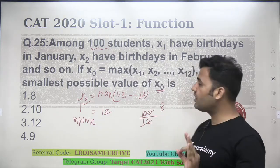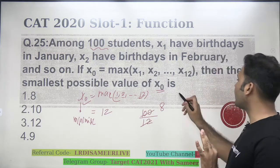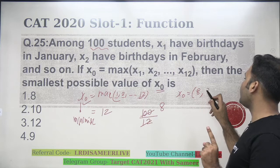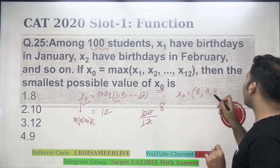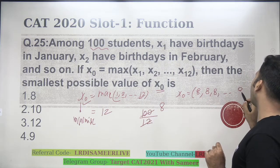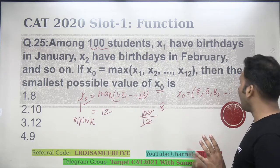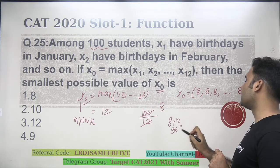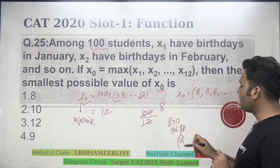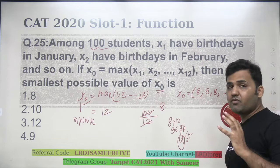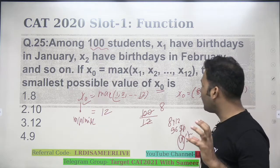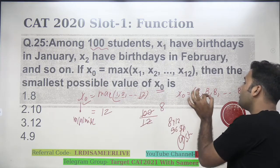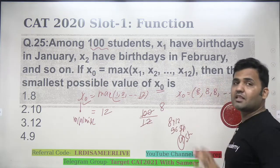So you see that, if I assume that 8 students have birthday in January, 8 students have birthday in February, 8 students have birthday in March, and so on, 8 students have birthday in December, I will be able to accommodate 8 into 12, that is 96 students, but still 4 students will be left.